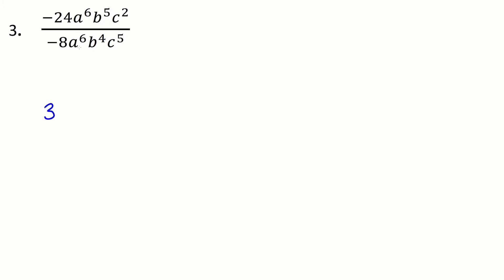Then a to the six divided by a to the six — that's something divided by itself, so that gives one. I don't have any a's to write. b to the five divided by b to the four: there's one more up top, so five minus four is one. You don't usually write the exponent of one, so we'll leave it blank. Then c squared up top — we've got more in the bottom, so five minus two is three, and that ends up in the bottom: c cubed. So that is a little bit cleaner. Feel free to use either method as you need to, or as your professor requires.